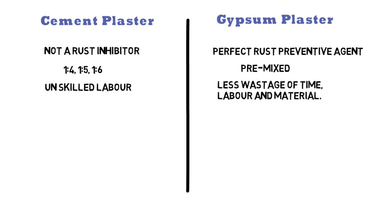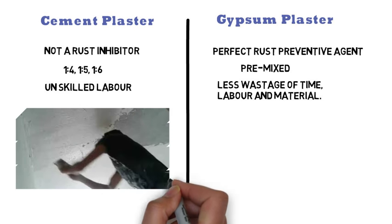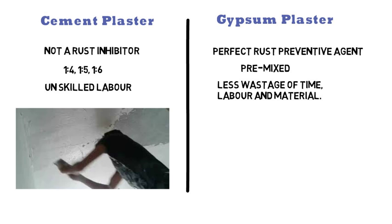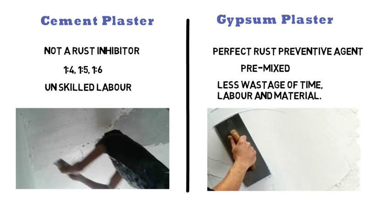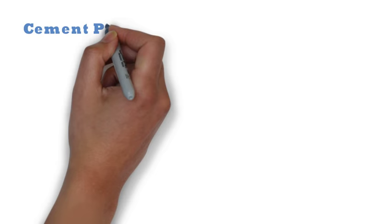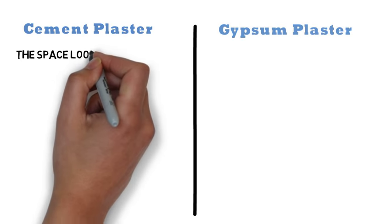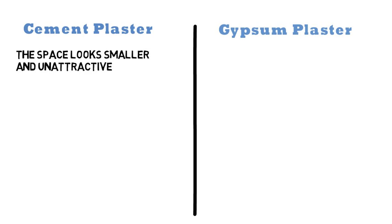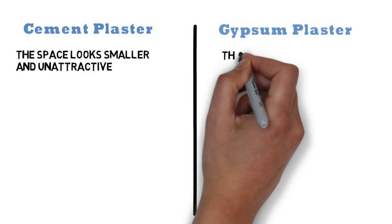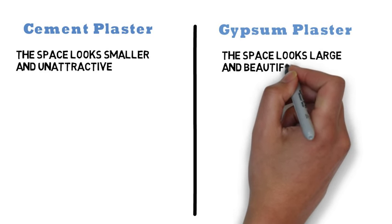After sand cement plaster, POP punning is required for a better and leveled surface finish. Gypsum plaster provides a smooth interior finish for ceilings and walls and it is an ideal background for good quality paints and wallpaper finishes. In case of a cement plastered room, the space looks smaller and unattractive as it is dark green in color. In case of a gypsum plastered room, the space looks large and beautiful as gypsum plaster is pure white in color.